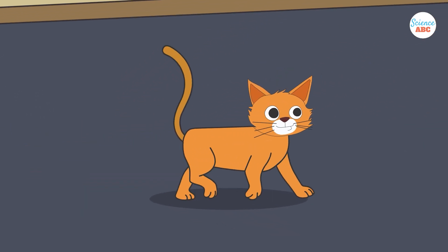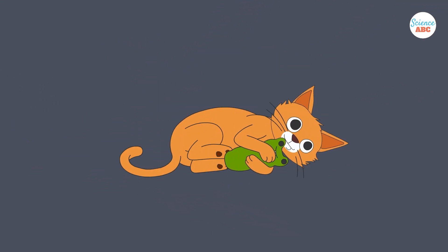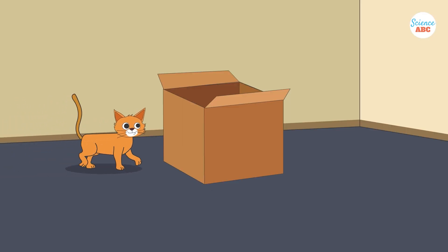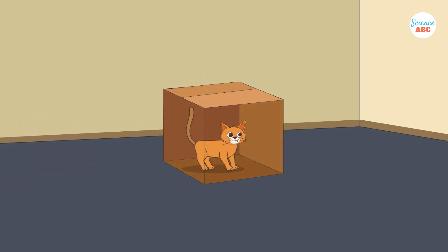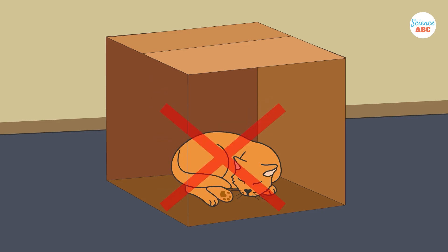Schrodinger's cat is a famous thought experiment that illustrates how, under certain interpretations of quantum mechanics, a hypothetical cat in a sealed box could be both alive and dead at the same time, until someone observes its state.